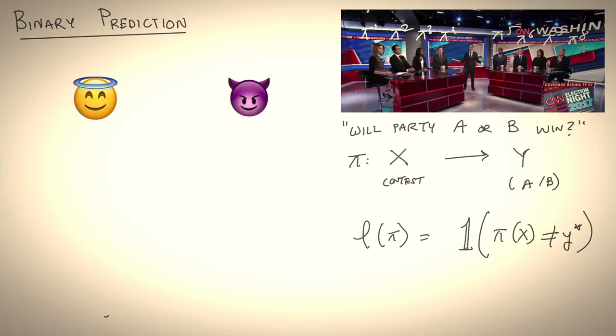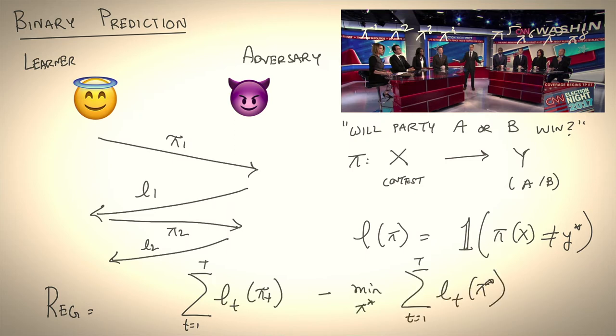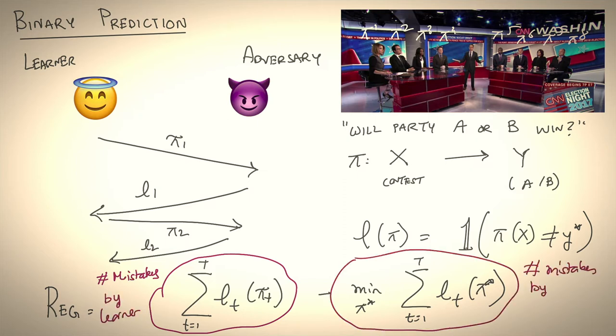So if you recall from lecture one, we have two players, a learner and an adversary. Every round, the learner plays a strategy π₁, he gets a loss ℓ₁. And this continues. And our goal is to minimize regret. So regret is the difference of two terms, the sum of the losses of the learner at every time step minus the loss of the best expert across all time. So in this case, specifically, the first term would be the number of mistakes made by the learner, let's call this m. And the second term would be the number of mistakes made by the best expert, let's call this m star.